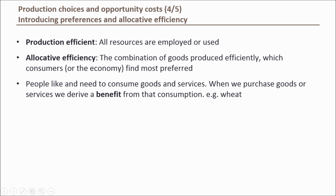Consumers also prefer more to less. This is why any point within the PPF curve cannot be an allocative efficient point, because all the points within the PPF represent production allocations not at full employment — so there's always another allocation with more of at least one of the goods that can be achieved.